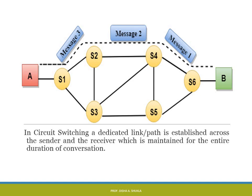In circuit switching, a dedicated link or path is established between the sender and the receiver, which is maintained for the entire duration of the conversation. Whenever A wants to send data to B, the whole path is decided first — for example, S1 connected to S2, further to S4 and then to S6. Another dedicated path could be from S1 to S3 to S5 to S6. Basically, in a circuit switch network, the entire path is decided before transmission starts and maintained for the full duration of the conversation.